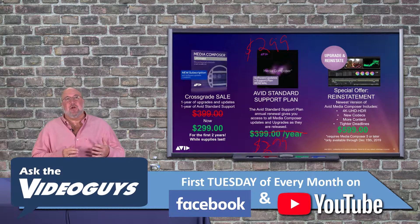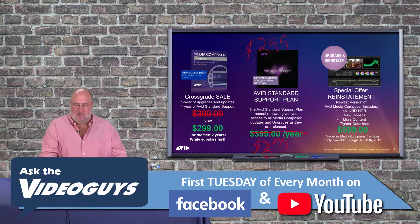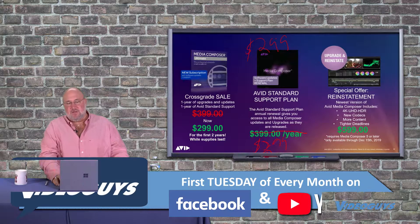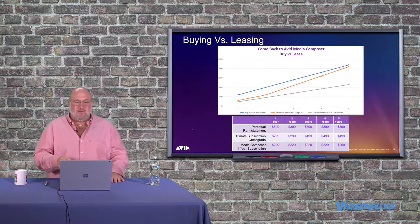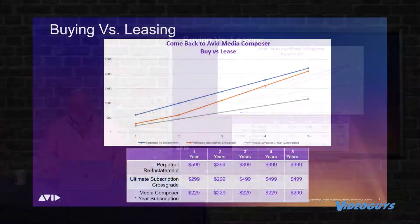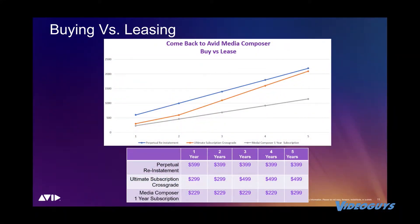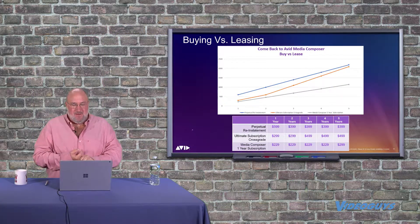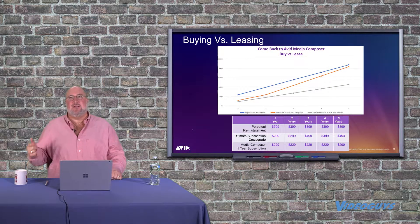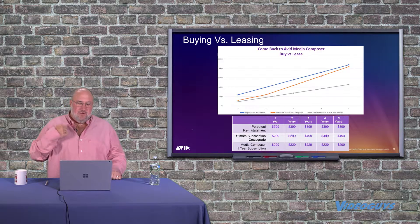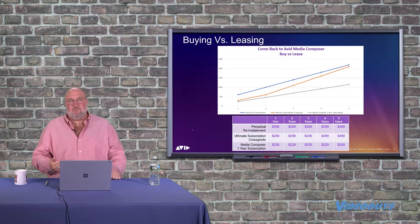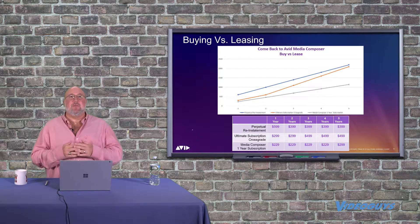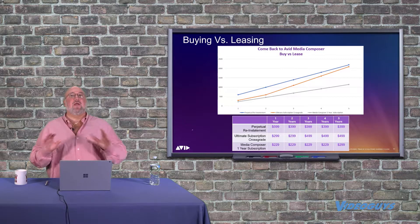We did a show called "What's the Right AVID for Me?" that you definitely want to watch — it's on our website and YouTube. If you're on Media Composer and your software lapsed, so you're not eligible to just buy an annual renewal, you have a couple of choices: you can buy the perpetual reinstatement for $5.99 and then $2.99 for annual support, or you can get the Ultimate Subscription cross-grade for $2.99 for the first two years and $4.99 after, or you can just subscribe to the $2.99 base version of Media Composer.